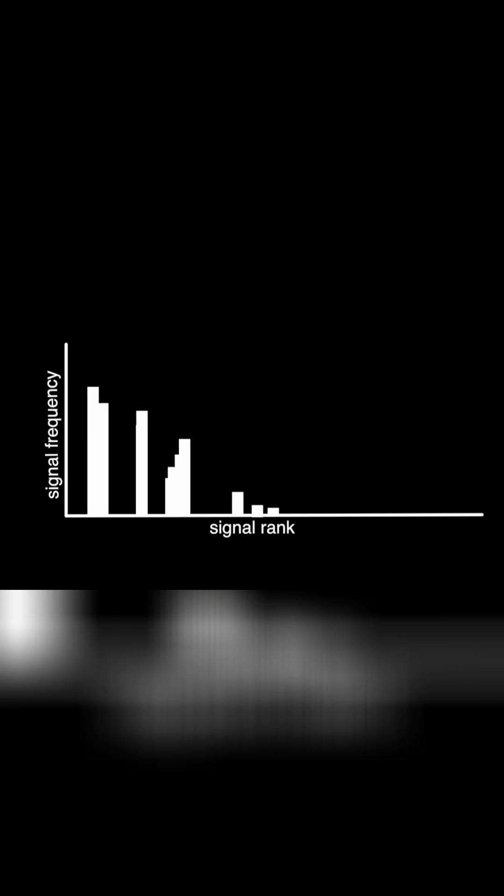And by the time they reach adulthood, the graph converges on a slope of about negative one, which is the same as humans.